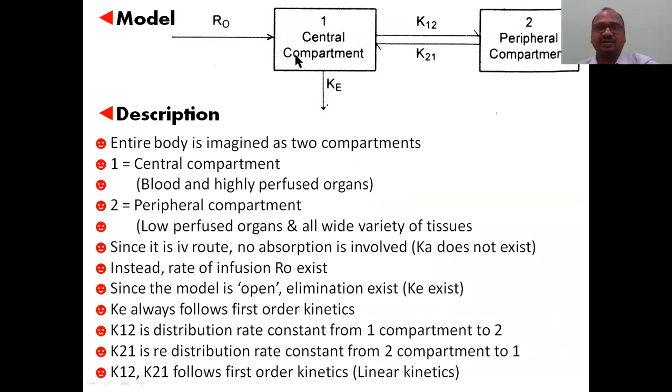Compartment one is always the central compartment consisting of blood and highly perfused organs. Number two is the peripheral compartment consisting of low perfused organs and a wide variety of tissues. Lungs, liver, kidney, brain all come in the first compartment along with systemic circulation.